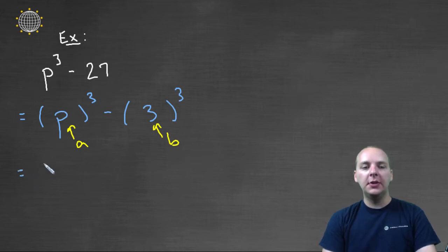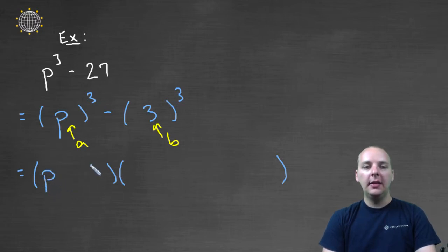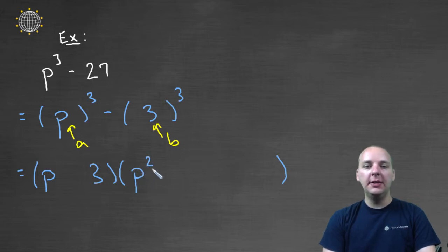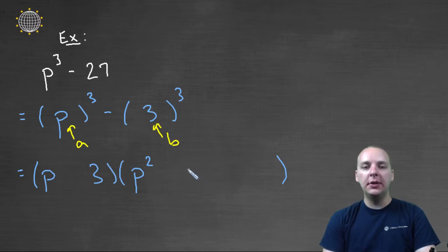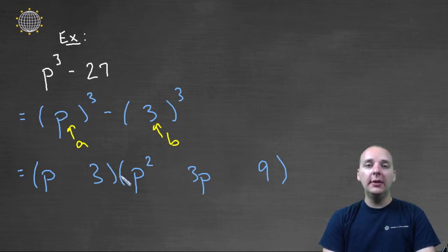We set up our factorization with one small parenthesis and one large parenthesis. The AB terms go: A, which is P, and then B, which is three. Then A squared, which is P squared; then AB, which is P times three or three P; and then B squared, which is nine.